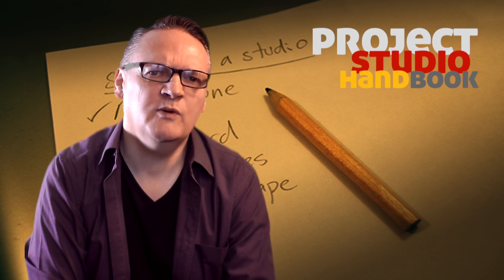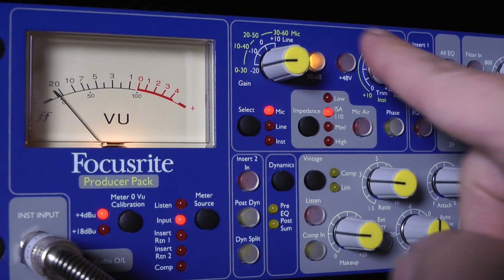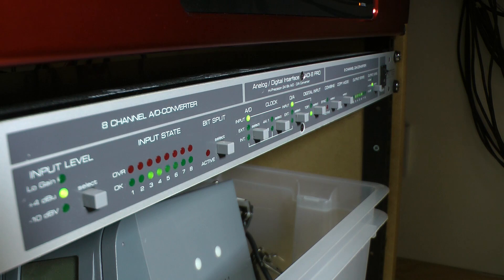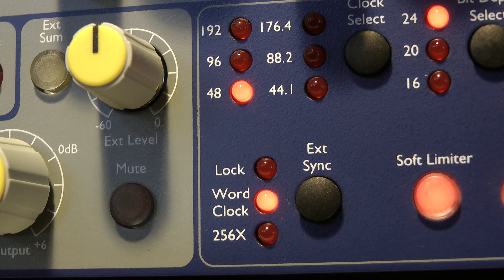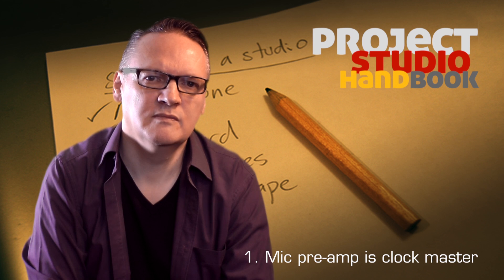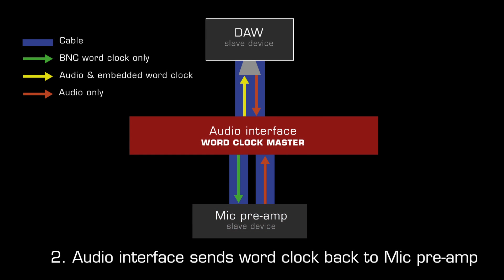However, when you have a one-way digital audio signal connection, such as from a microphone pre-amplifier voice channel with its own built-in analog-to-digital converter, which is being connected to an audio interface where the interface is the clock master, the mic pre-amp has no way to synchronise to the system. There are two solutions. Number one, set the mic pre-amp as the clock master device. And number two, send word clock from the interface to the pre-amplifier voice channel.